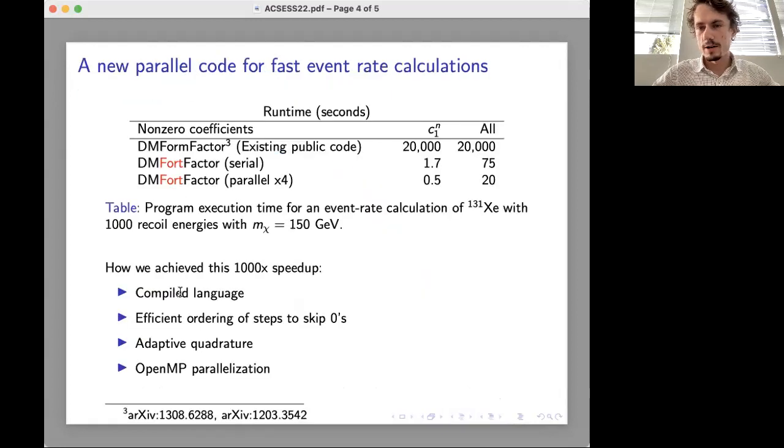Using my interdisciplinary background in both nuclear physics and computational science, I've taken existing formalism for computing these models of event rates and written a new much faster code for experimentalists to use.